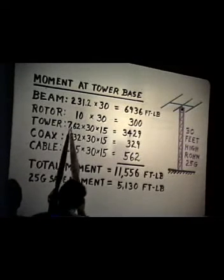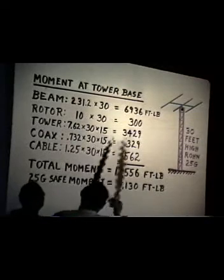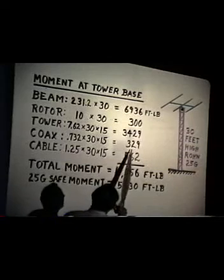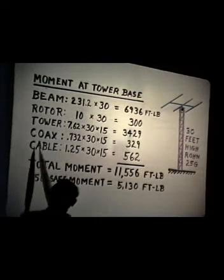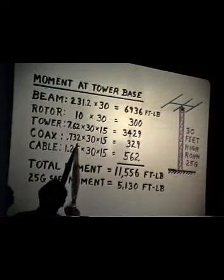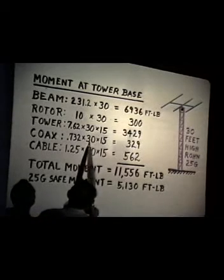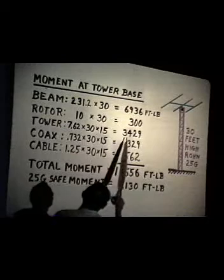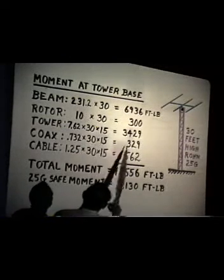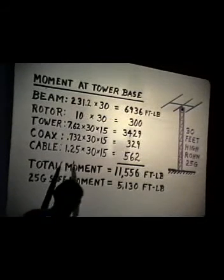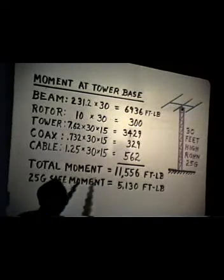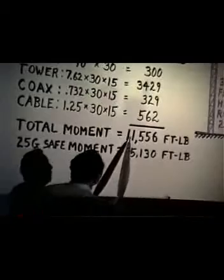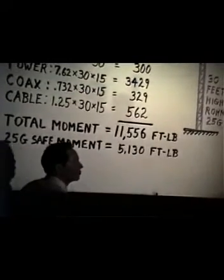So 7.62 pounds per foot times 30 for the full length gives the total wind force on the tower, times 15 feet, to give 3,429 foot-pounds. The coax is 329 foot-pounds, and the cable for the rotor is 562 foot-pounds. This gives us a total moment at the base of this tower, under maximum wind conditions, of 11,556 foot-pounds.